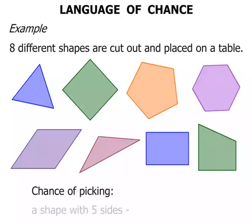What's the chance of picking a shape with five sides? In other words, a pentagon. Well, there's one there, so it is possible to pick that.